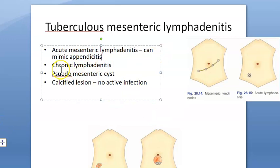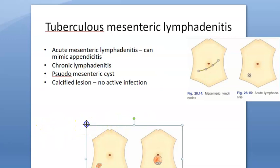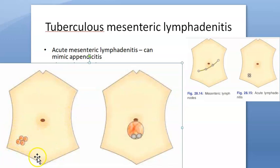In chronic lymphadenitis, children will have failure to thrive, weight loss, appetite loss, emaciation, pallor, and fever. The abdomen is protuberant, and you will need to differentiate these nodes from lymphoma. Nodes can be felt in the right iliac fossa.